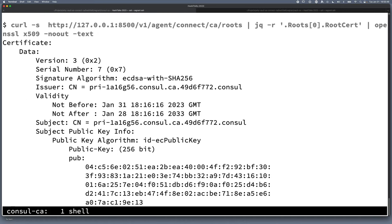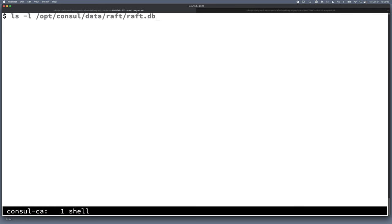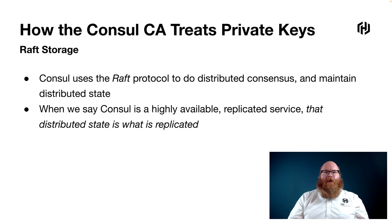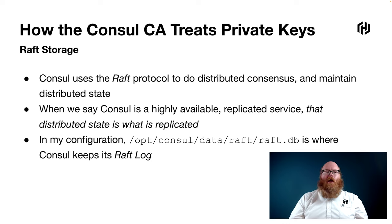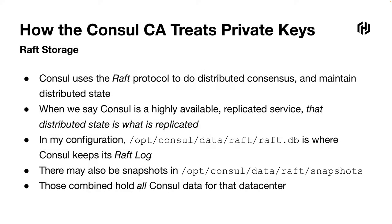In that certificate, like we expect, there is a public key section, and that corresponds to the private key associated with this root CA certificate. Now, how does Consul store its data? Consul uses the Raft protocol for distributed consensus and to maintain distributed state. When we say that Consul is a highly available replicated service, that distributed state is what is replicated. In my particular configuration, there's a raft.db file in that directory, which is the Raft log, and there may also be any number of snapshots. The latest snapshot plus that raft.db file combined hold all of the Consul data for that data center.